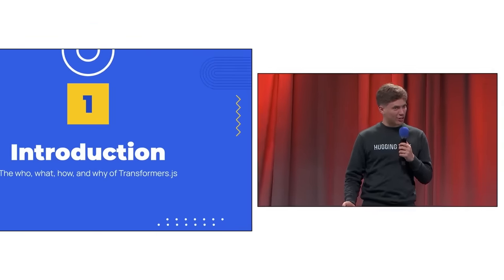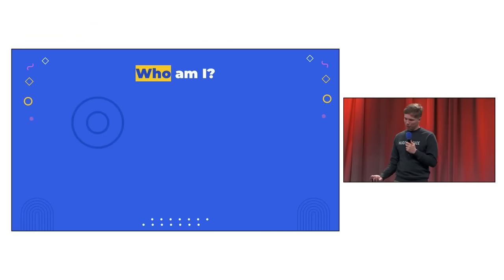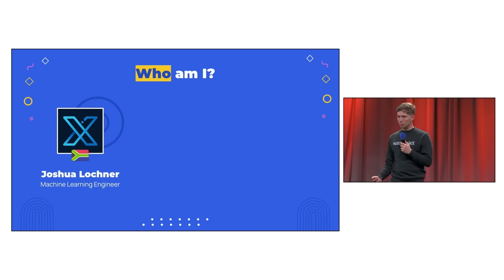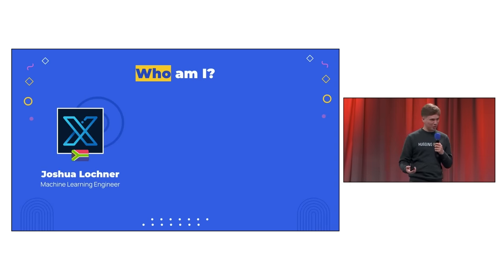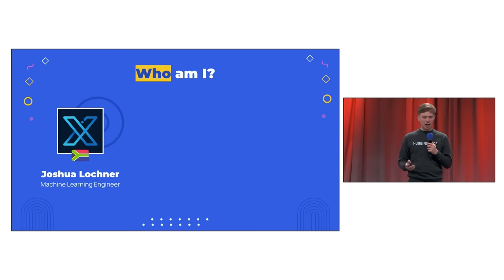First up, a small introduction, starting with who am I. You may know me better by my Twitter or GitHub username, Xenova, but in reality, I'm a 24-year-old machine learning engineer from South Africa who's focused on bringing powerful AI models to the web.